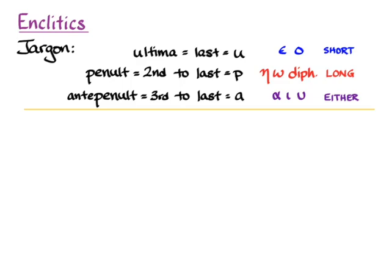It matters sometimes whether an accent is over a short syllable or a long syllable. Remember that epsilons and omicrons on their own are always short. Etas and omegas are always long, and so are diphthongs most of the time. And alpha, iota, and upsilon can be either long or short.